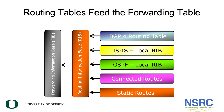You have several routing tables on the right side of the screen, such as the BGP4 routing table, the IS-IS local routing information base, the OSPF local routing information base, connected routes, and static routes. The best path from each of these routing tables is used to create the global routing table, which is then used to generate the forwarding table.